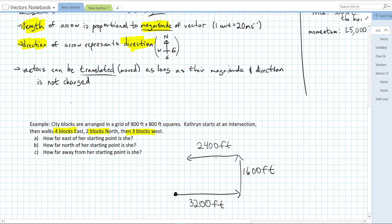So we should be able to figure out how far east of her starting point is she. Well, she traveled 3,200 feet east and 2,400 feet west, so we can just do 3,200 minus 2,400 feet, 800 feet east of this start.